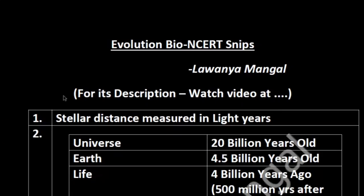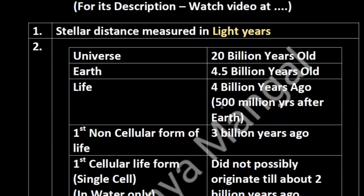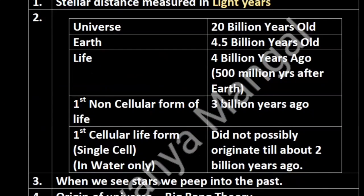First point: stellar distance is measured in light years. This is an exam question, so focus on this. Now here is a timeline table — Universe is 20 billion years old, Earth is 4.5 billion years old, and life is found around 4 billion years ago — that is 500 million years after Earth. This is a tricky part given in NCERT.